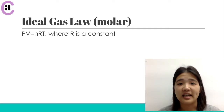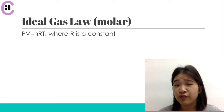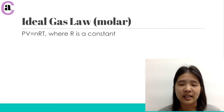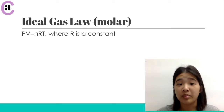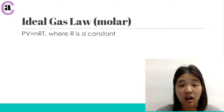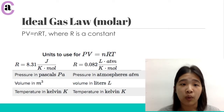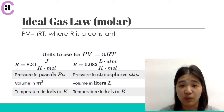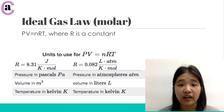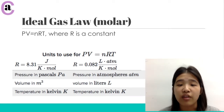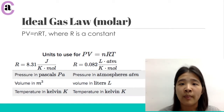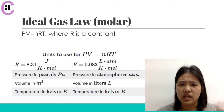PV equals nRT — you may also hear this as "PERVNERT." This is an equation that you will probably use a lot. R is the constant, and here's a nice reference graphic. A lot of these variables can be measured in different ways. On one side, you have R in units of joules per Kelvin per mole. And on the other side, you have R in units of liters times atmospheres per Kelvin per mole. So that is a really good reference chart that you can take a look at.